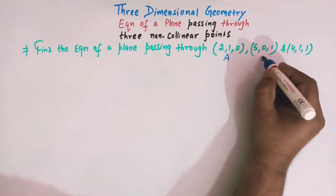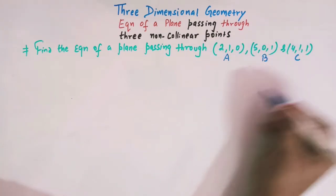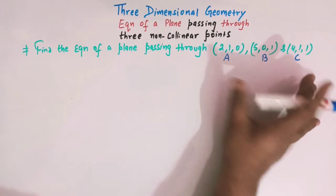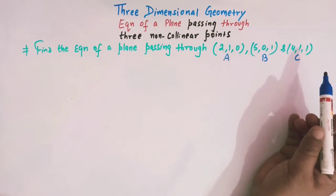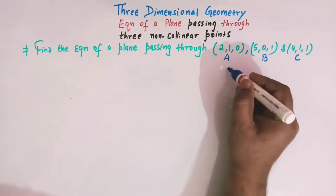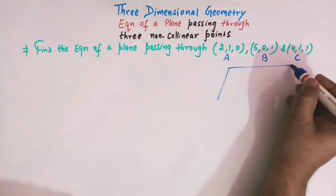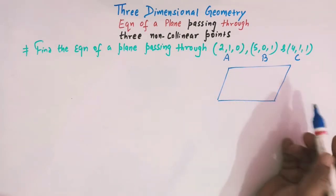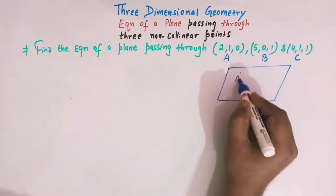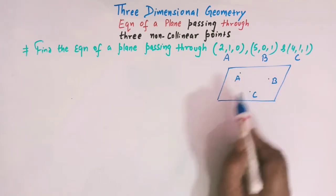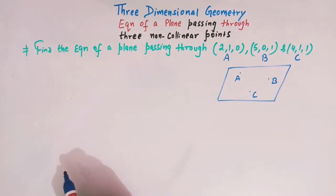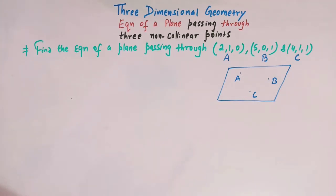Let us denote these three points by the letters A, B, and C. We know that a unique plane passes through three non-collinear points. Let us take a rough diagram — suppose this is the plane whose equation is to be obtained, and here we have these three points A, B, and C. Non-collinear points are those points which do not lie on the same straight line.